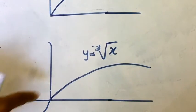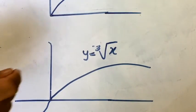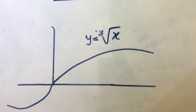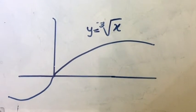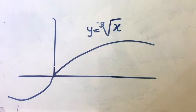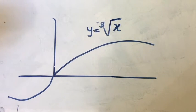We also have y equals x to the power one third, which is the cube root of x. This is also a power function, and it is important to note that all these cases — positive integers, negative integers, and fractions — are all power functions of the form y equals x power a.